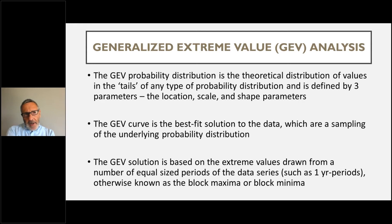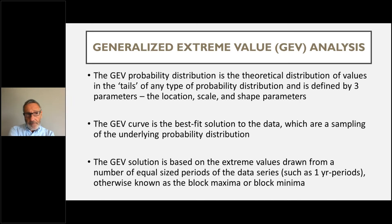An extreme value analysis assesses the probability of occurrence of events that are more extreme than most or all of the previous observations of a random variable. It is widely used in many fields, including engineering, finance, earth science, and hydrology. The generalized extreme value analysis makes use of a time series of the highest or lowest values in equal-sized blocks of data, such as a one-year period.